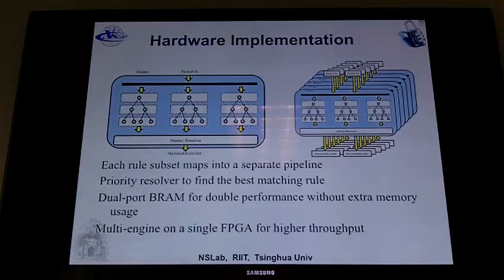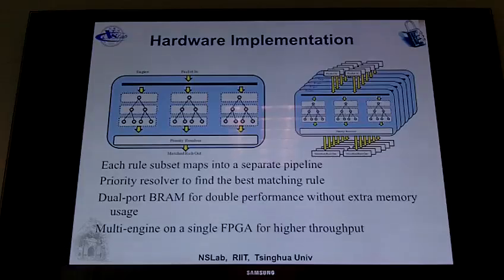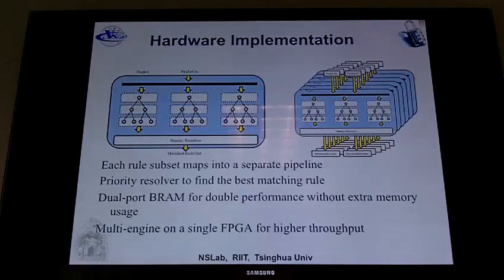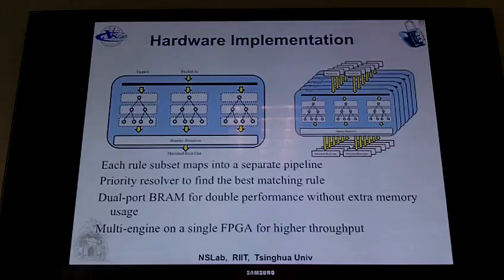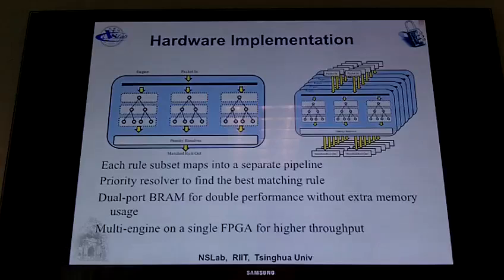Since the original rule set is partitioned into many different subsets, you have to traverse all the different subsets to find the rule. For each subset you build a decision tree and have a separate pipeline. When matching a packet, the packet goes through every decision tree, and at the end it aggregates results by finding the highest priority rule out of all decision trees. We also utilized dual-port BRAM to double the performance for extra memory usage. Because memory usage is significantly reduced, we can put multiple engines on a single FPGA for even higher throughput.